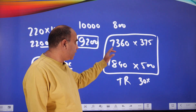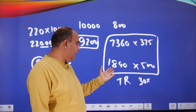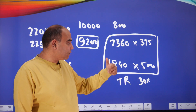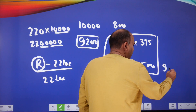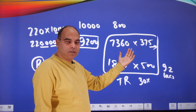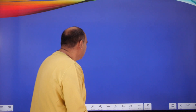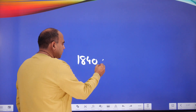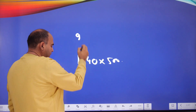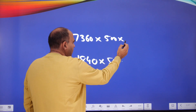Now we calculate the revenue from each group. For the 1,840 units sold at ₹500: 1,840 × 500 = ₹9,20,000, which is ₹9.2 lakhs. There's a useful trick for the second part: we need to calculate 7,360 × 500 × (3/4), since the 25% discount means selling at three-quarters of the printed price.